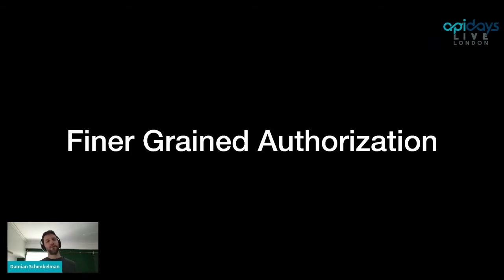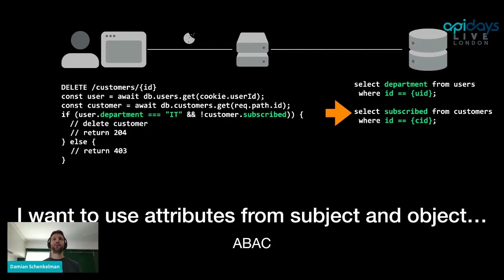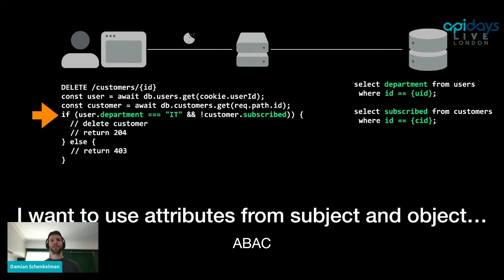Over the years, as your application and business become more successful, you want finer-grained authorization and more control about who can use what. In that specific example, you might want to use attributes from the subject — the user — and the object, which is the customer you're trying to delete, to make this decision. A next version of that endpoint might fetch the department the user belongs to and check a boolean attribute on the customer — whether they are subscribed or not — and allow deletion only if the user is in the IT department and the customer is not subscribed. This is known as attribute-based access control: considering more attributes from both subject and object to make an authorization decision.